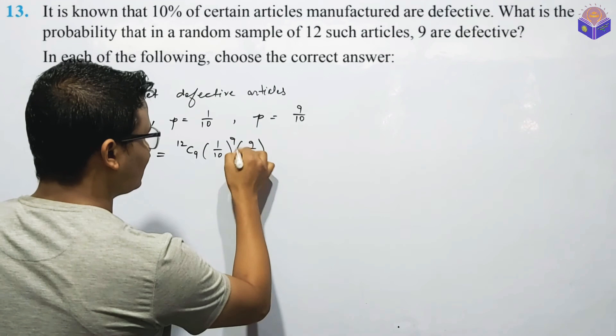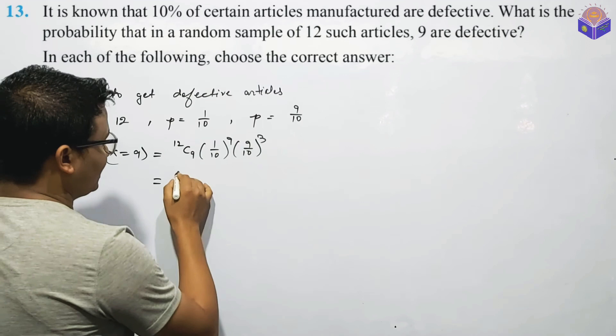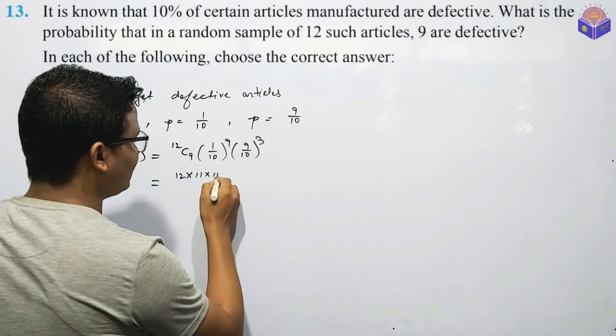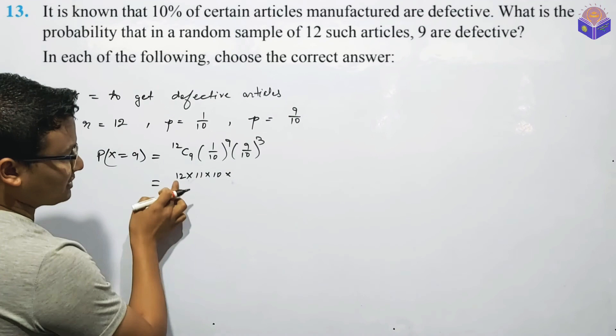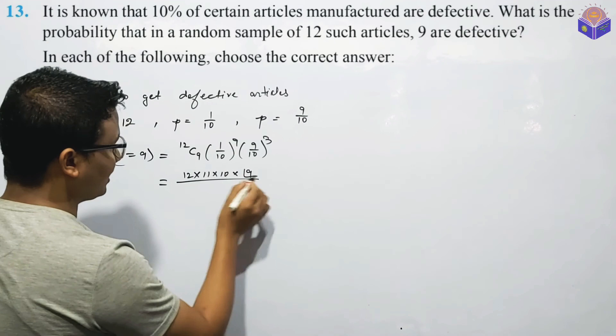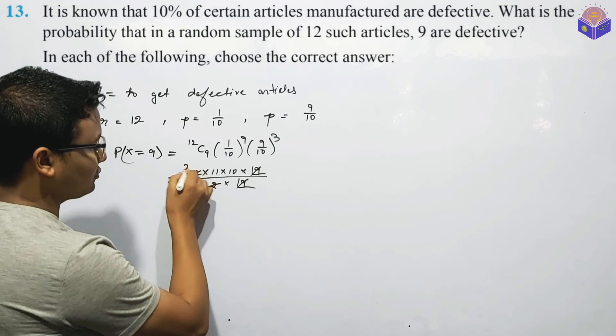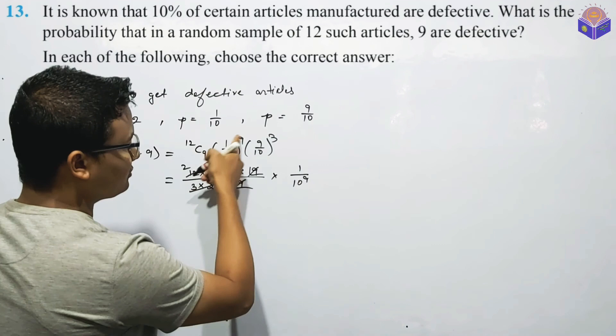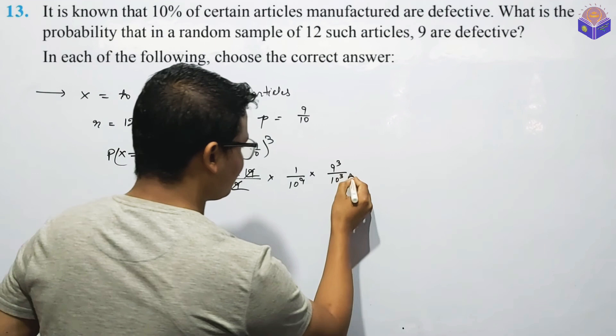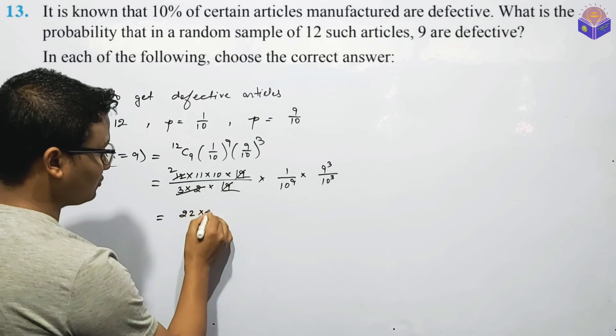This is 1 by 10 whole to the power of 9, into 9 by 10 to the power of 3. There you go: 12C9. This is 12 into 11 into 10 into 9. Students: 12C9 equals 1 by 10 to the power 9 into 9 cube upon 10 to the power cube.